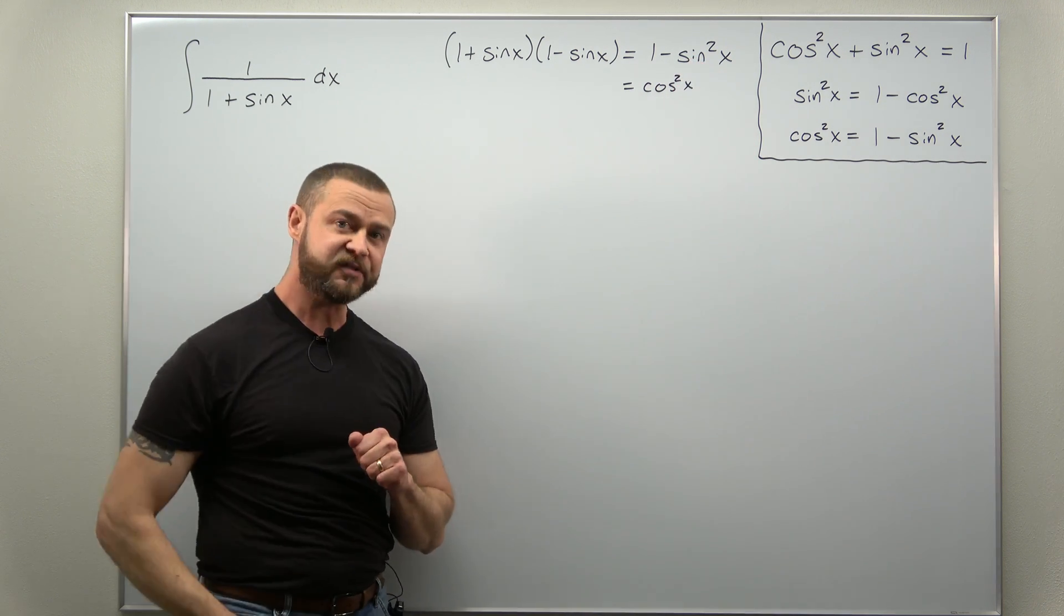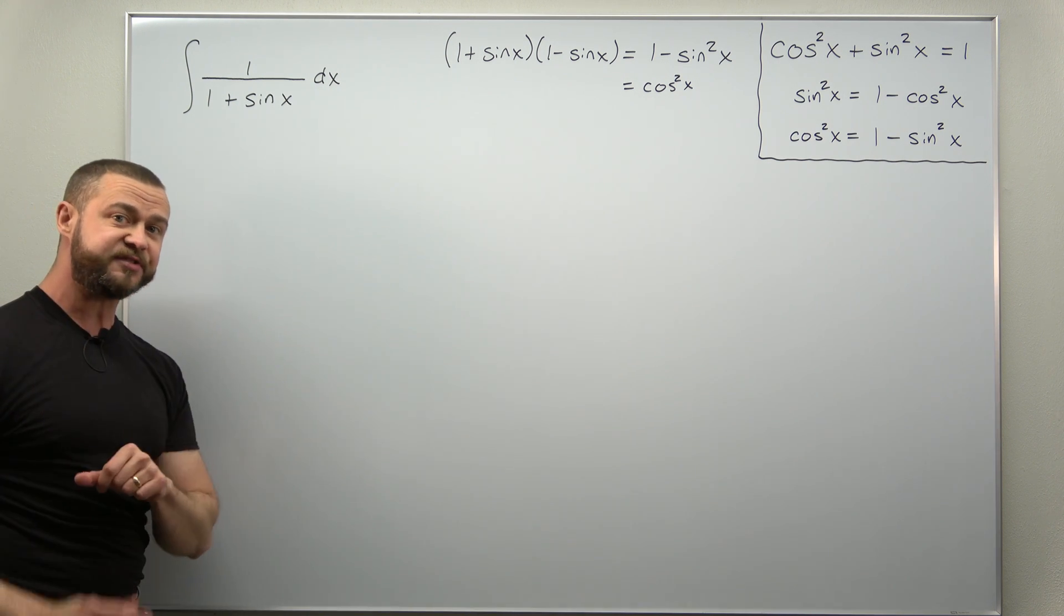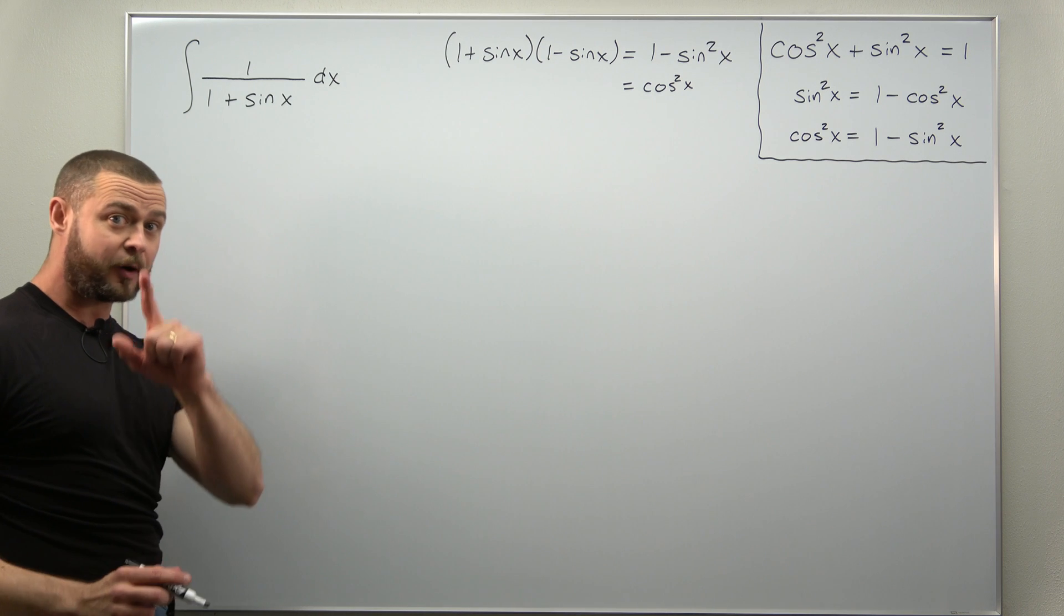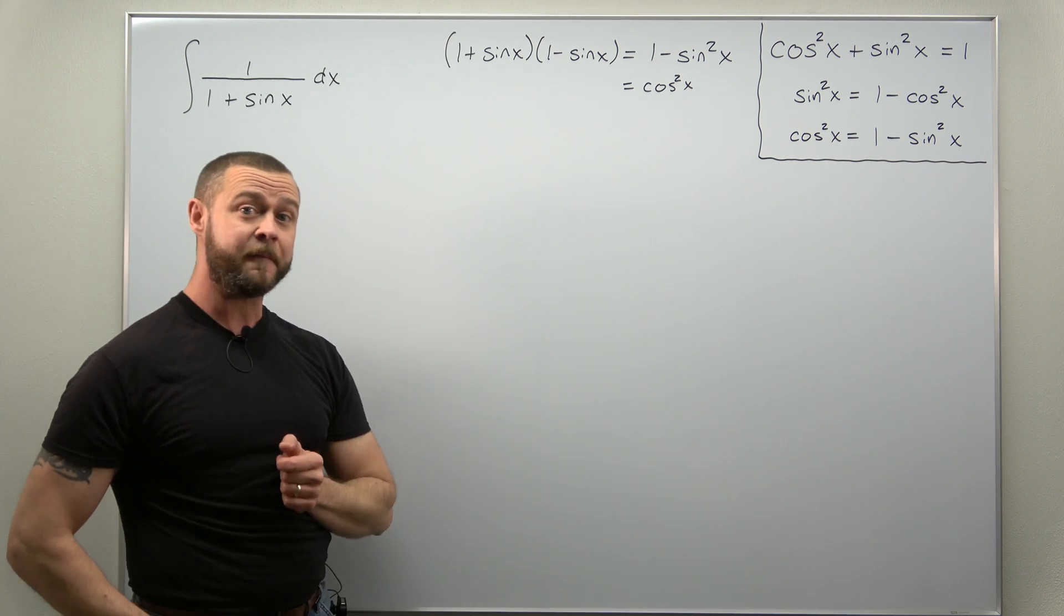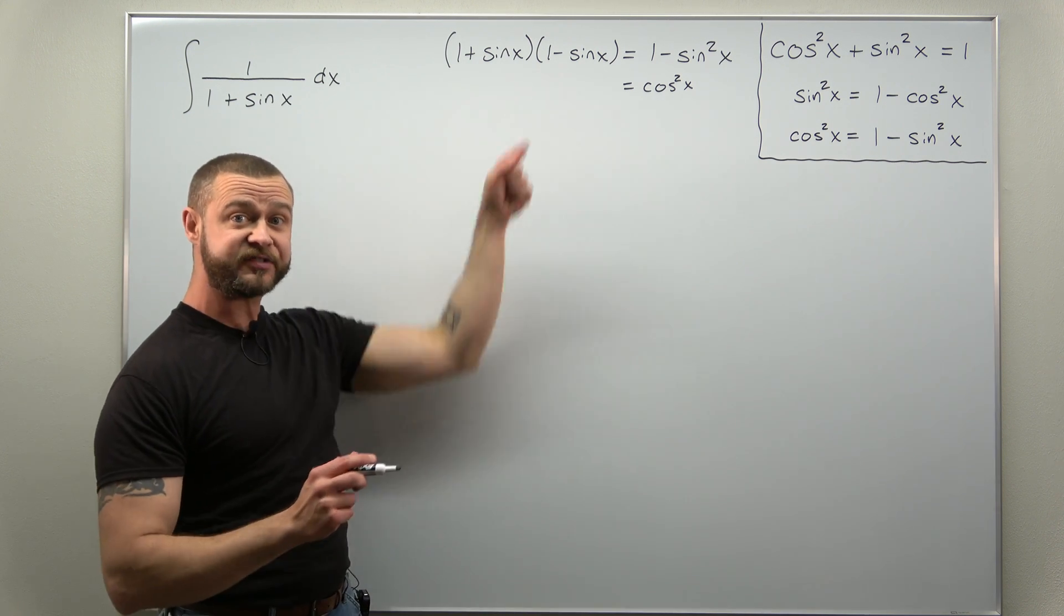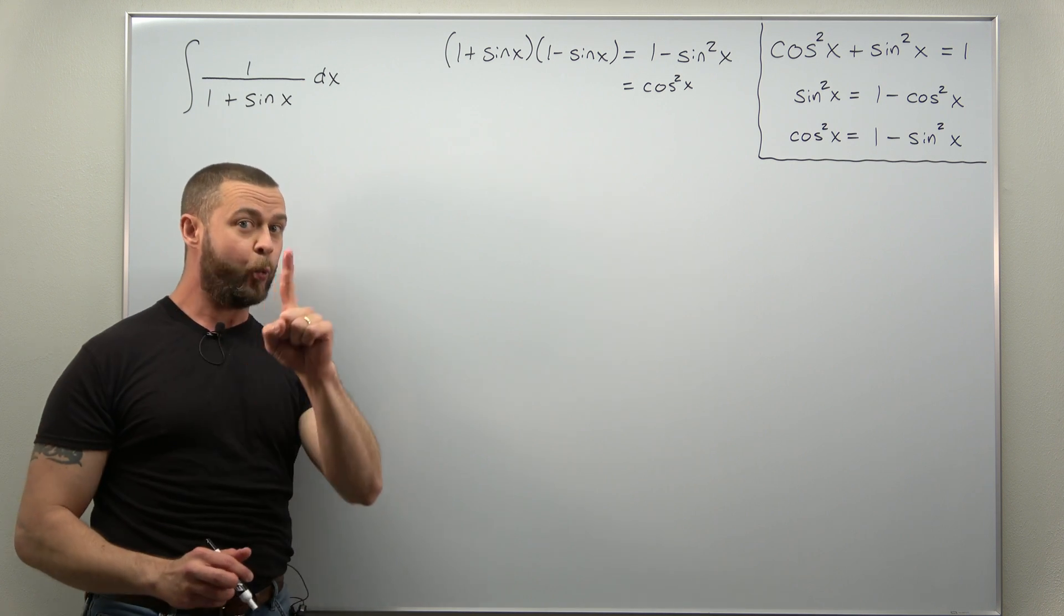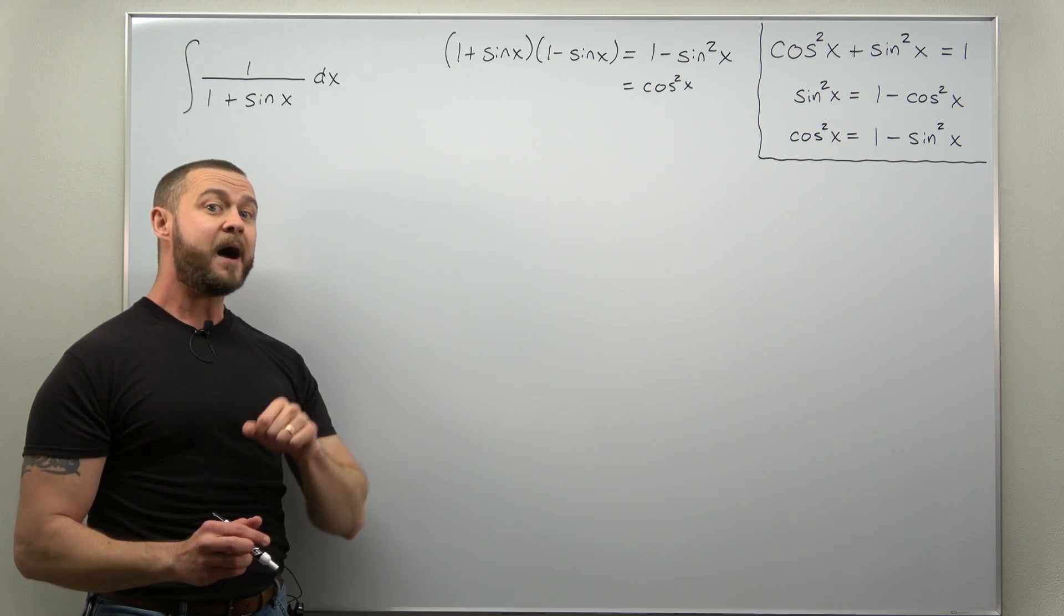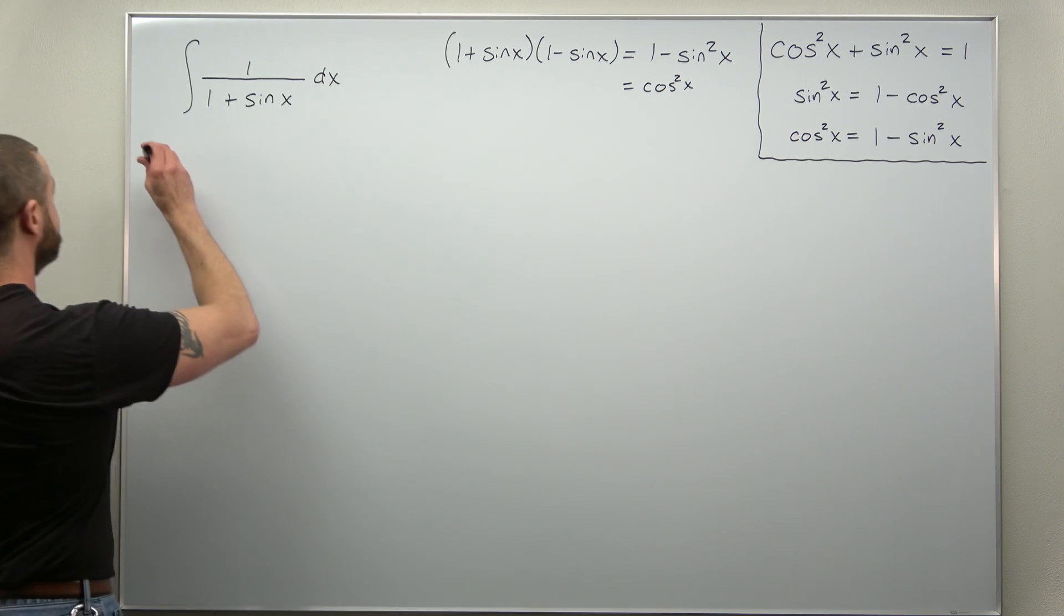So how do we put the pieces together? Our integral in the denominator has 1 plus sine of x. We're going to try to multiply by 1, and if we take a look at this identity up here we would like a factor of 1 minus sine of x in that denominator. So we're going to multiply by 1 in the form 1 minus sine of x divided by 1 minus sine of x. So let's write that down.